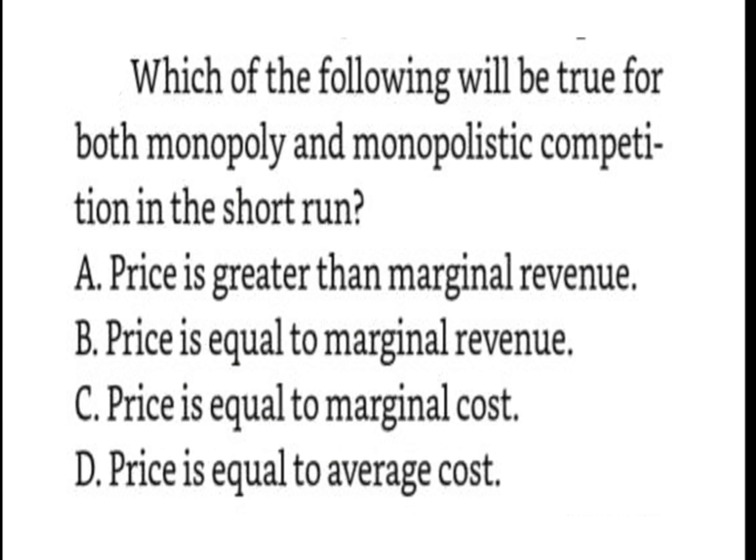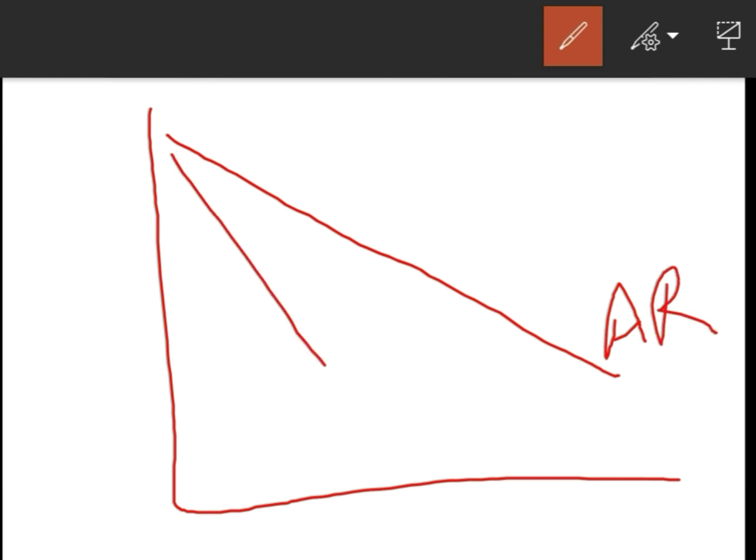This is our second question. Which of the following will be true for both monopoly and monopolistic competition in the short run? We all know that in monopoly or in monopolistic competition, this is the average revenue curve and this is the marginal revenue curve, and marginal cost curve cuts MR curve from below.